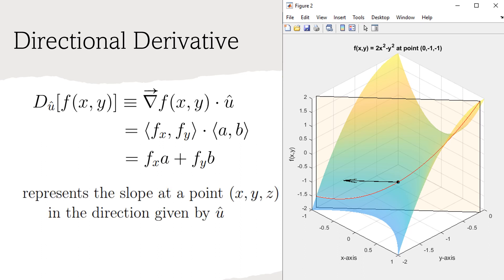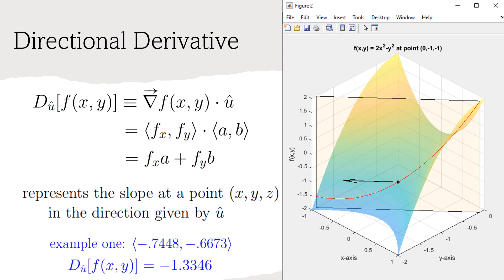So the directional derivative is aptly named, as it represents the slope at some point in the direction of u. In the plot to the right, the black arrow represents the unit vector u. Notice that following the arrow's direction on the surface f creates a two-dimensional curve, shown in red. We learned how to deal with such curves in Calculus 1. For the given example, we see the slope in the given direction is negative, and the directional derivative confirms our visual suspicion.